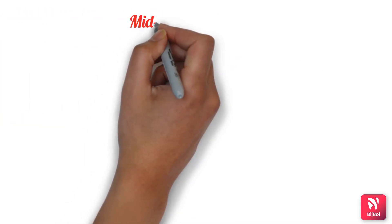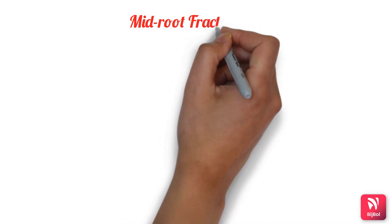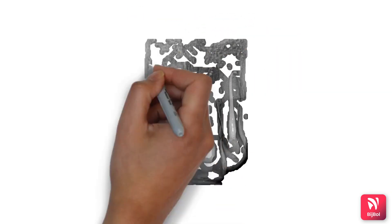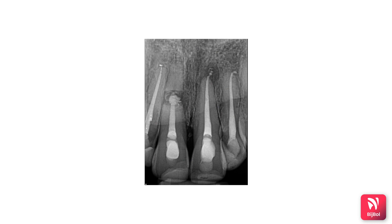For mid-root fractures, management depends on the mobility of the coronal segment, the location of the fracture line, the status of the pulp, and the position of the tooth after fracture. Treatment options include root canal therapy for both the coronal and apical segments even when they are not separated, or splinting in select cases.